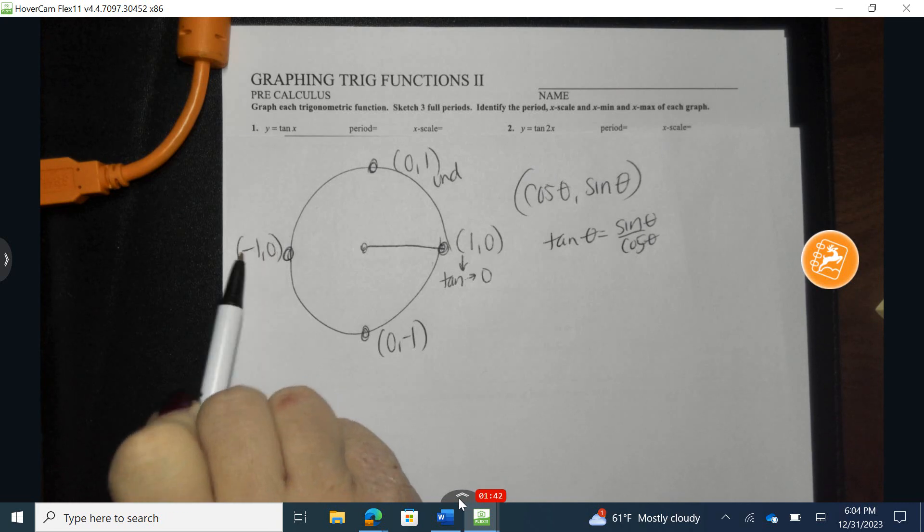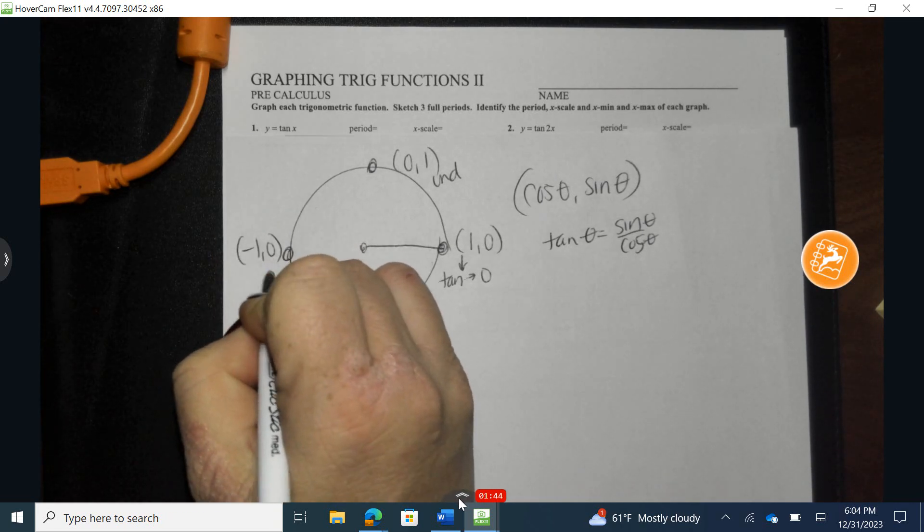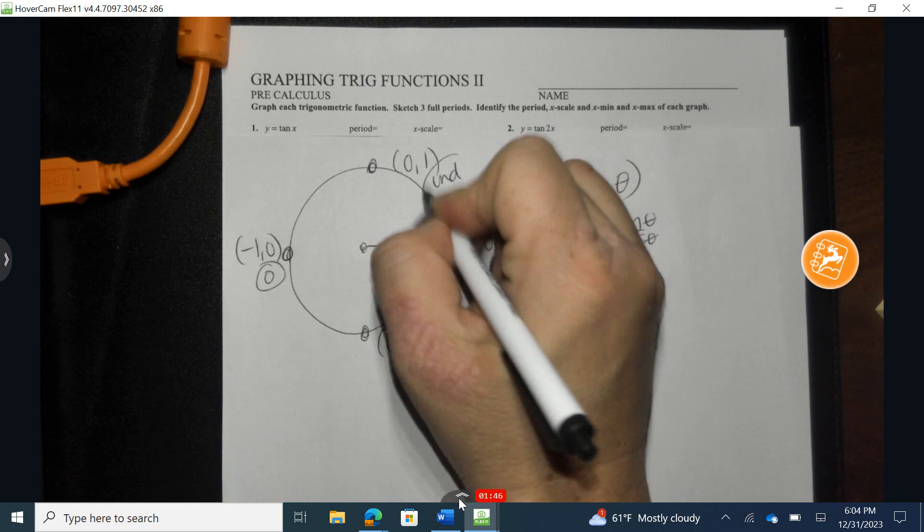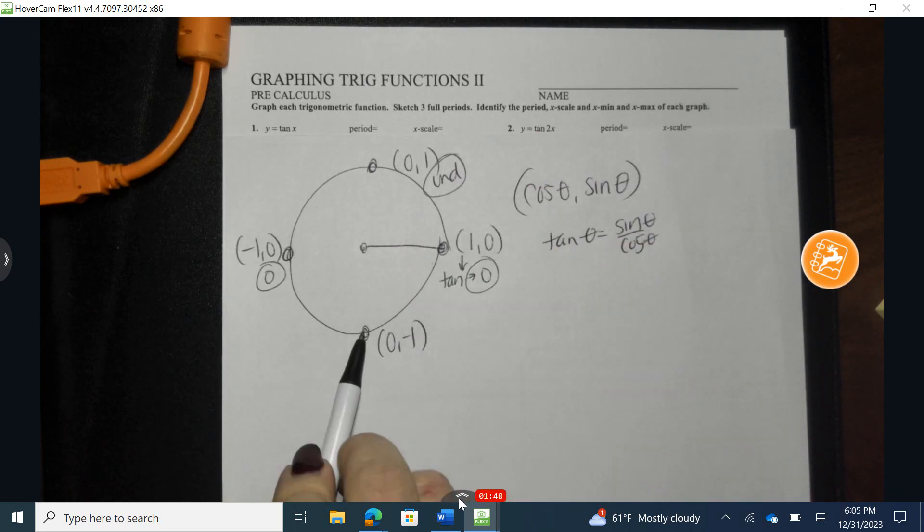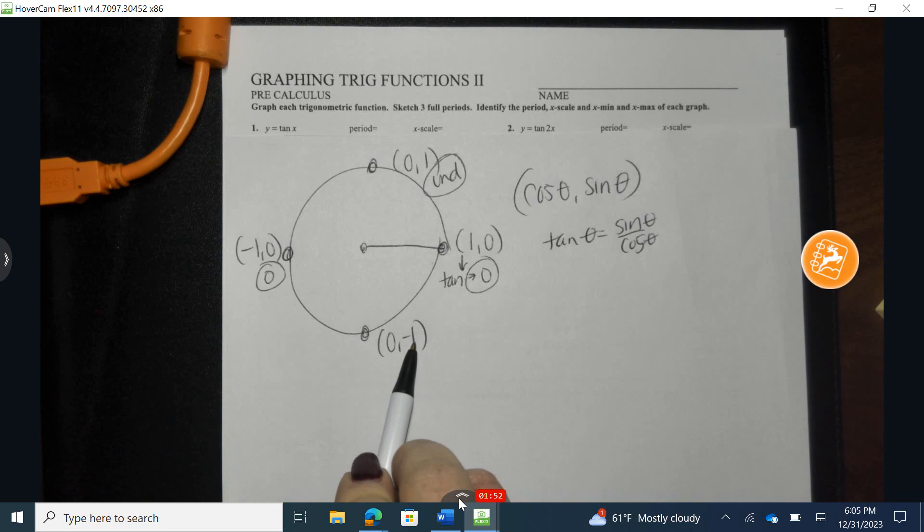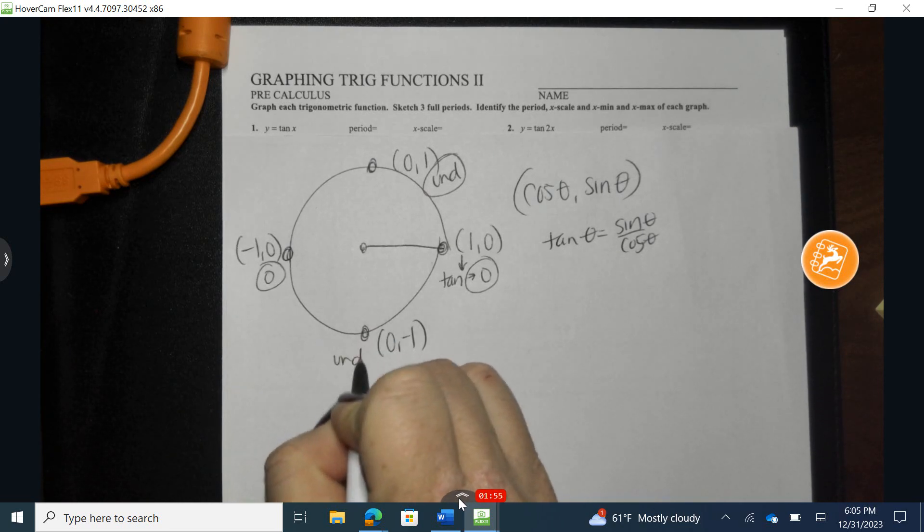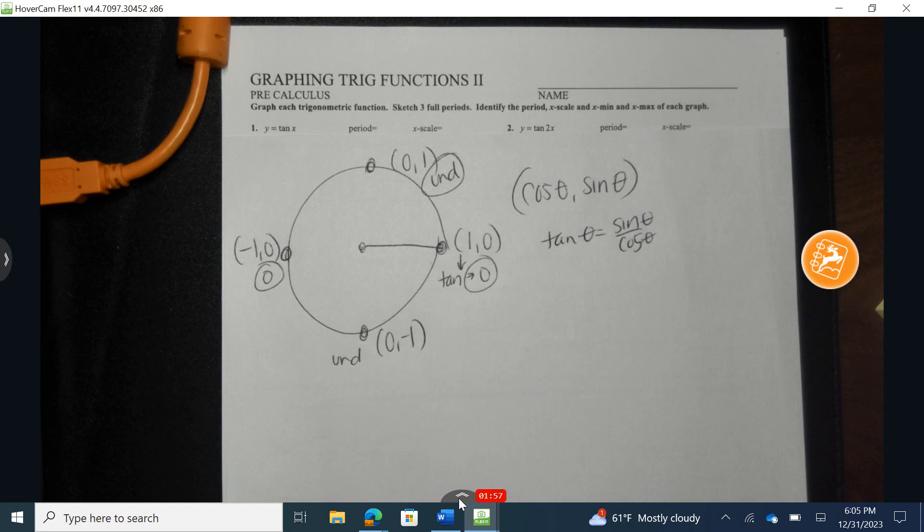At 180 degrees, 0 divided by negative 1 would be 0. I'm just going to circle these. And here at 270, also known as 3 pi over 2 as a radian measurement, negative 1 divided by 0, again, would be undefined. And now let's go back and let's look at some of these other major points.